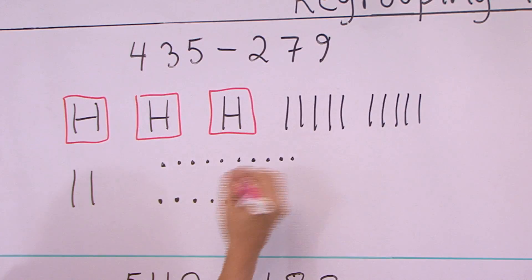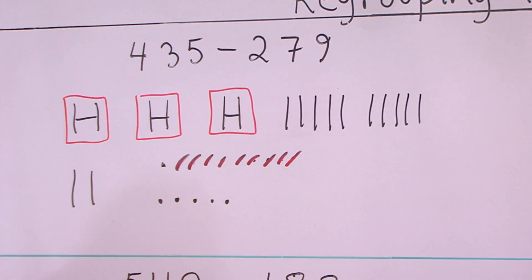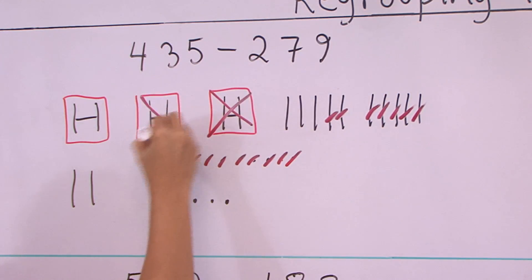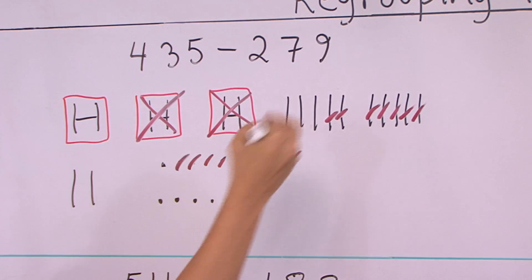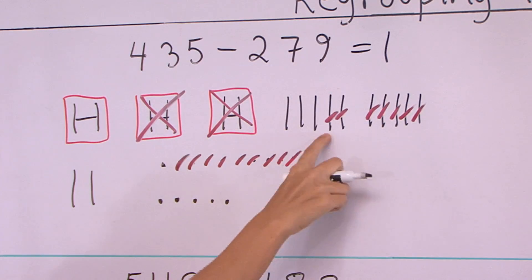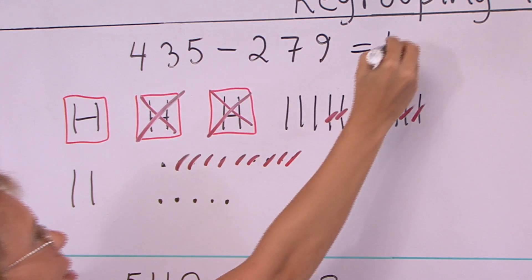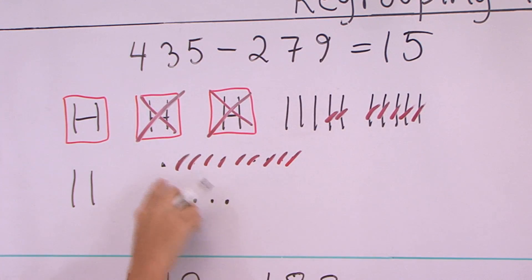I can subtract nine, 1, 2, 3, 4, 5, 6, 7, 8, 9 from there and seven tens and two hundreds. So now we can read in the picture what's left. One hundred, three tens and two tens, five tens and six.